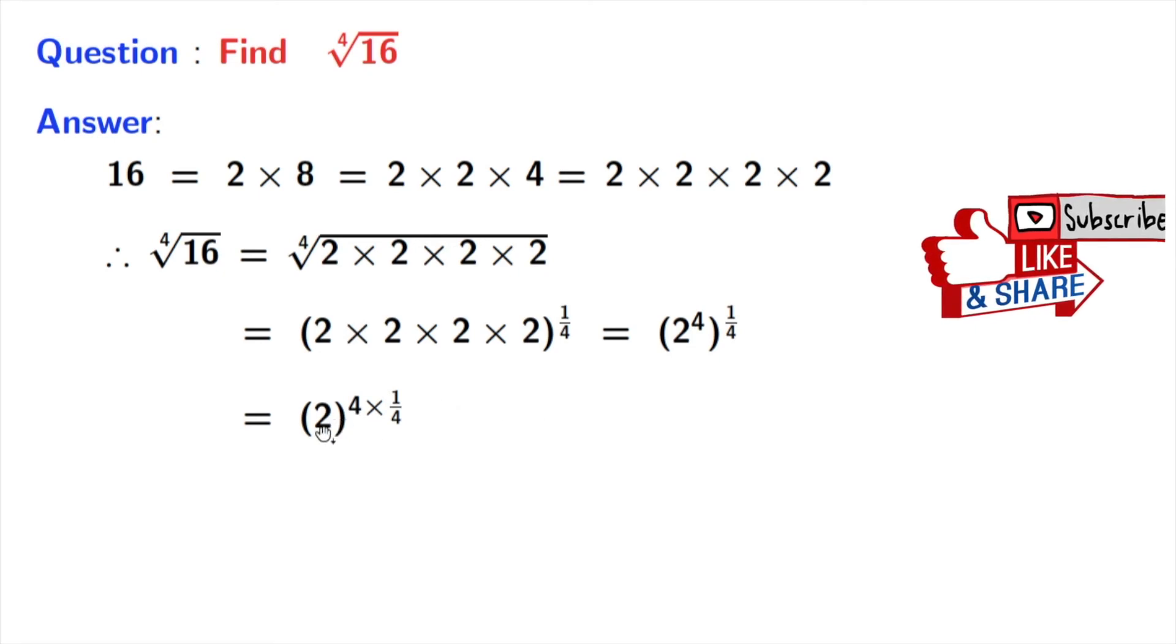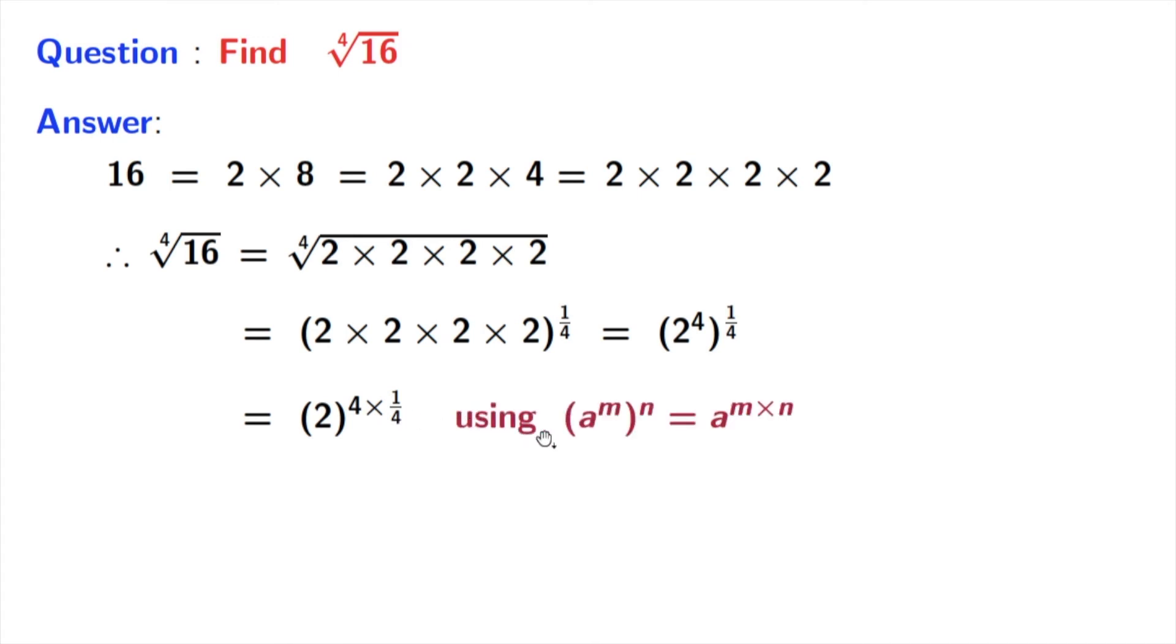So we will write it as 2 power 4 times 1 by 4, using the rule of a power m power n is equal to a power m times n. Here a is 2, m is 4, and n is 1 by 4.